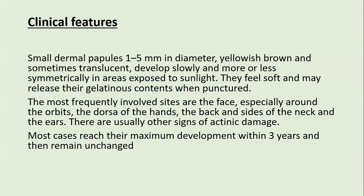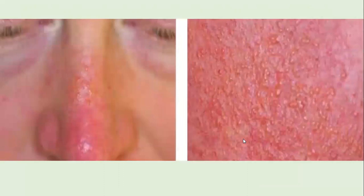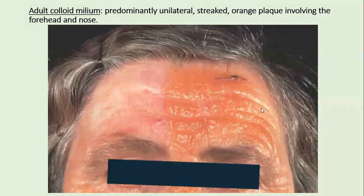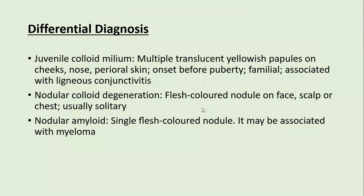Clinical features include small dermal papules 1 to 5 mm in diameter, yellowish-brown or translucent, developing slowly and symmetrically on sun-exposed areas. They are soft to touch and may release gelatinous content when punctured. The most frequently involved sites are the face (especially around the orbit), dorsal surface of the hands, back and sides of the neck, and ears. Most cases reach maximum development within 3 years and then remain unchanged. One variant shows predominantly unilateral streaked orange plaques involving the forehead and nose.